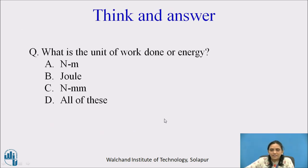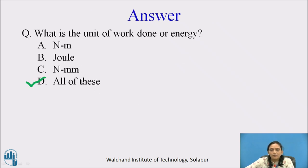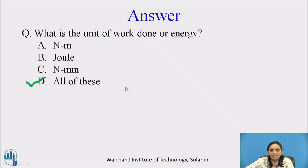Now pause the video here. We discussed work done and energy. Answer the question: what is the unit of work done or energy? Your options are Newton into meter, joule, Newton into mm, and all of these. The correct answer is all of these. Work done formula is force into distance — Newton is the unit of force and meter or mm is the unit of distance. Joule is related as 1 Newton meter equals 1 joule, so joule is also a unit of work done or energy.